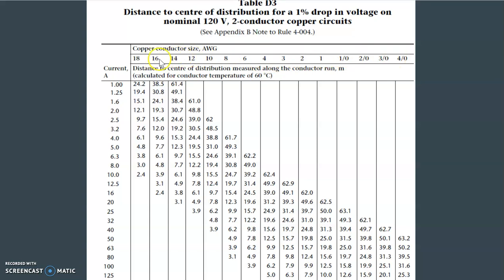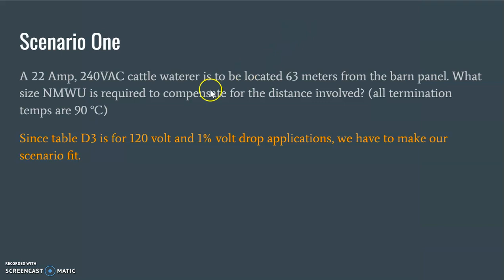And then we also have our AWG size across the top here, and those correspond to conductor sizes that we would see, starting at 14 AWG. They have an 18 and a 16 listed here as well. But those are your common wire sizes, and it just goes up to 4/0. Another thing to note about this particular table: 120 volts. So everything has to be 120 volts, and it only allows for a 1% voltage drop. So that's going to be a little bit tricky with the information that we have in our scenario. Because again, it's 240 volts, and you'll notice that our table in D3 is only for 120 volt and 1% volt drop applications. So we have to make our scenario fit.